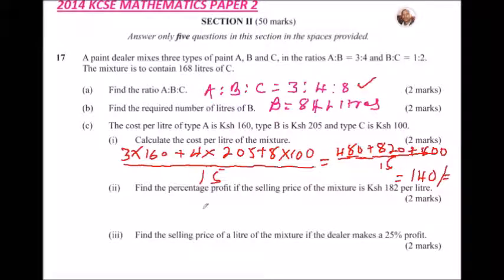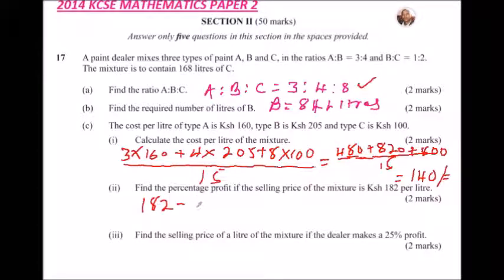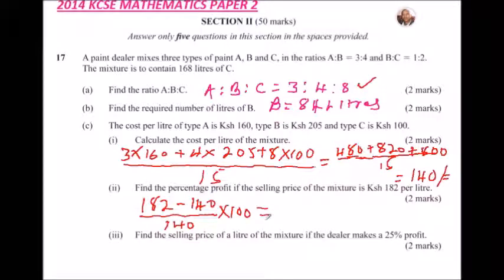Number two: find the percentage profit if the selling price of the mixture is 182 Ksh per liter. Percentage profit = (selling price − cost price) ÷ cost price × 100 = (182 − 140) ÷ 140 × 100 = 30%. So the percentage profit is 30%.